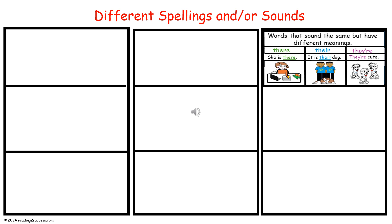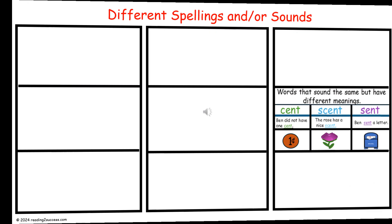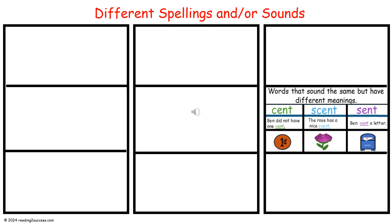Also covered are three words that sound the same but have different meanings — there, their, and they're; the words cent, scent, and sent; and to, two, and too.